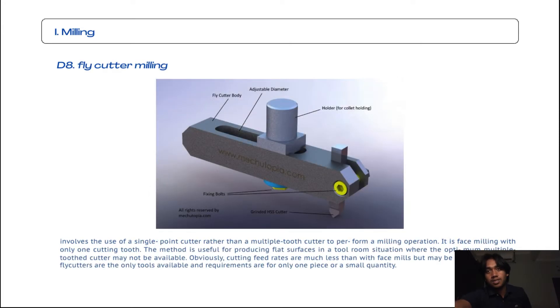Next, the eighth subtopic from milling is fly cutter milling. Fly cutter milling involves the use of a single point cutter rather than a multiple tooth cutter to perform a milling operation. It is face milling with only one cutting tooth. The method is useful for producing flat surfaces in a tool room situation where the optimum multiple tooth cutter may not be available. Obviously cutting feed rates are much less than with face mills, but may be satisfactory when fly cutters are the only tools available and required equipment for only one piece or small quantity.